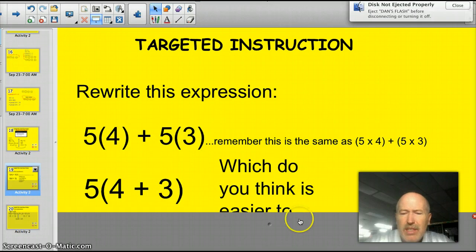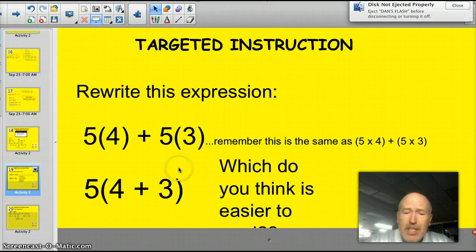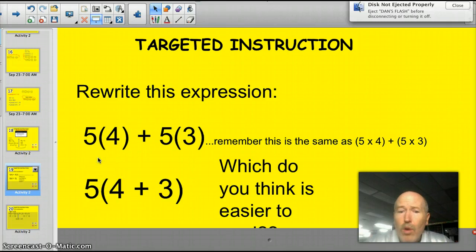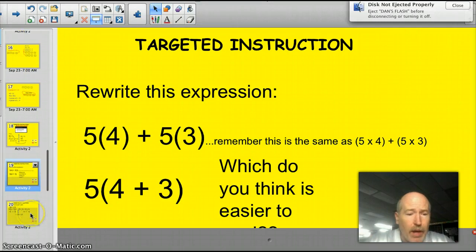See, you have the 5 times 4 and adding it to 5 plus 3, or 5 times 3. I can write that that way as well. Which do you think is easier? In this situation, I think this is, because this is 20, and this is 15, but I can look at this and go 7 times 5. I can do it faster in my head. So, it works both ways.